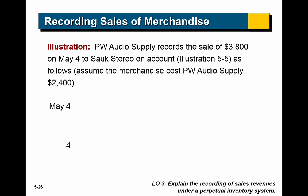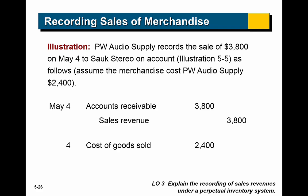Here's PW Audio Supply recording a sale of $3,800 on May 4th to Sock Stereo on account, where the merchandise cost $2,400. The first entry: accounts receivable $3,800 (debit), sales revenue $3,800 (credit). The second entry: cost of goods sold $2,400 (debit, expense account), inventory $2,400 (credit — it's no longer in their inventory). That's how you record the sale of merchandise.